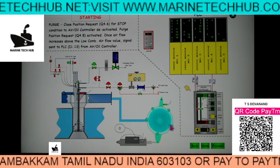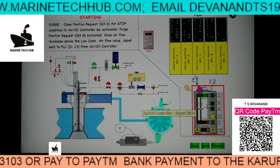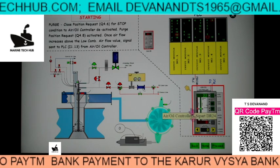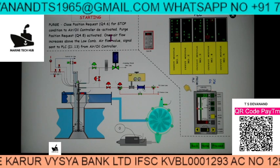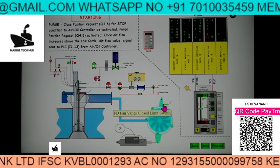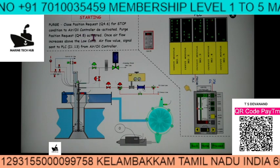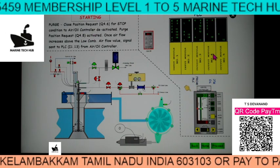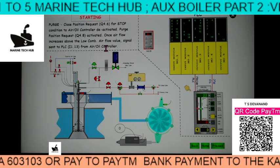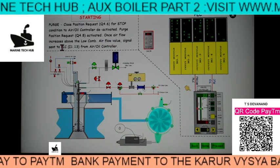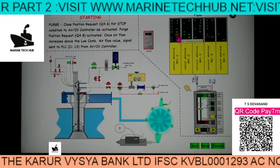Purge position request 4.8 is activated — module 4, position 8 is the purge position request activated. Air flow value signal is sent to PLC 1.13 — module 1, position 13 — 'low combustion air flow.' Now the purging is at 70%. You can see the FD fan vane opening up, so air is going until you reach 70% air flow. This is the purging operation. Purge means air flow 70% and oil flow 20%. The air oil controller sends signals to the FD fan vane positioner; the vane opens until air flow reaches 70%.